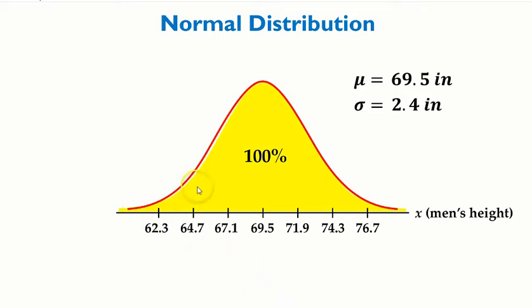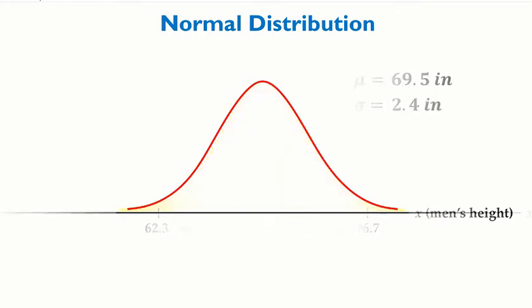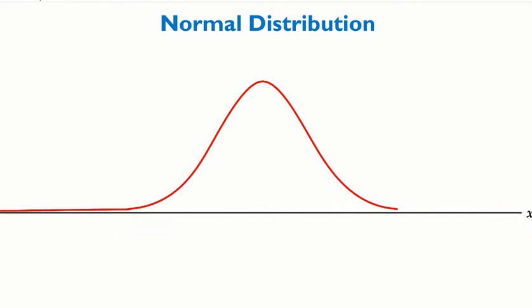Very important: the shaded region under the curve represents the percentage of men's height. The entire shaded region is 100% of men's height. The heights and the curve continue to the right and to the left, so 100% of men's height is the entire shaded region. We know 100% equals 1 as a decimal, so the area under the curve is equal to 1.